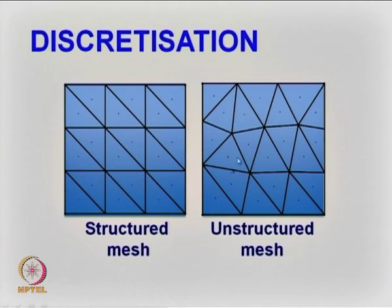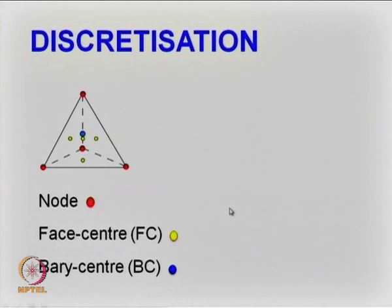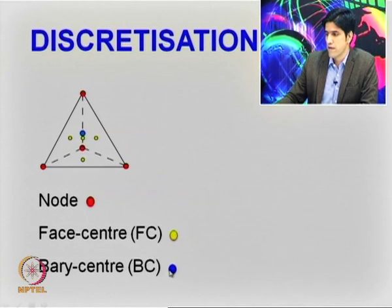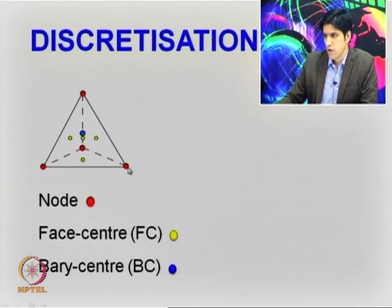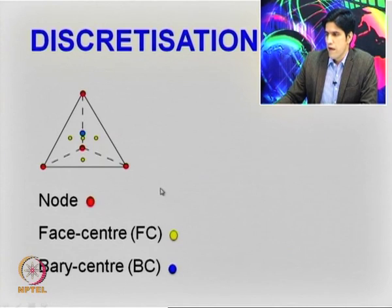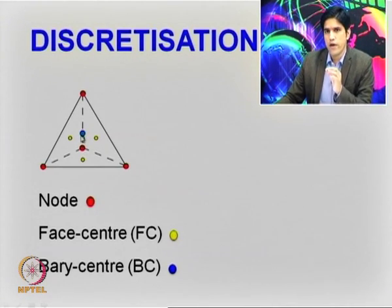Let's take a standard three-dimensional case where we have a tetrahedral mesh. The values — the E and H fields — are stored at the barycenter point of each element. This is in contrast to the finite element nodal method, where values are stored at nodal points, or edge elements where values are stored on edges. In finite volume, we have only one point per element where E and H are stored.